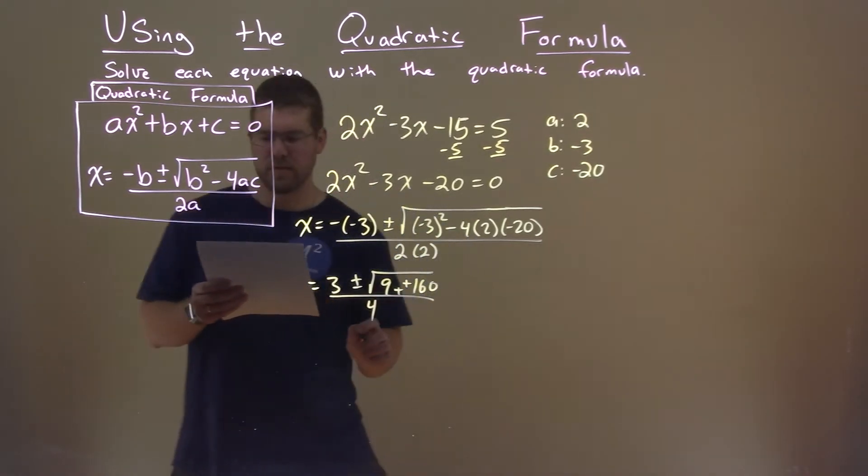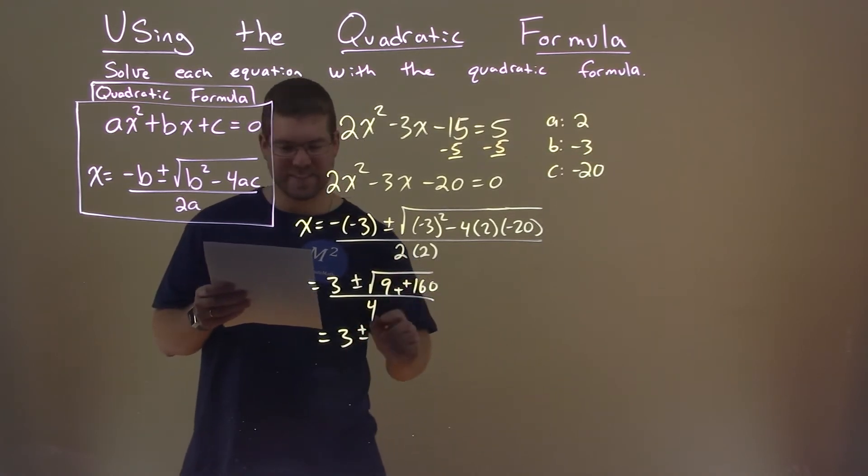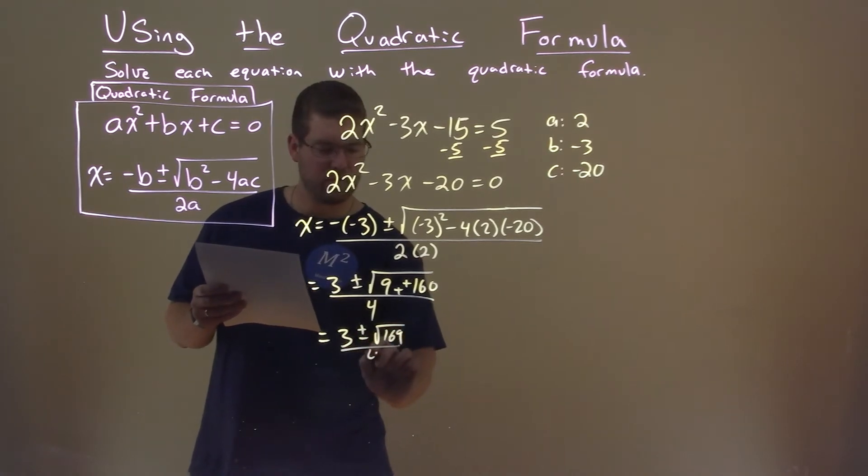Let's simplify this a little more here. And what do we have? 3 plus or minus, well, 9 plus 160 is 169, over 4.